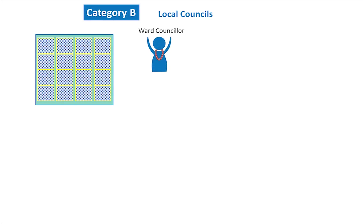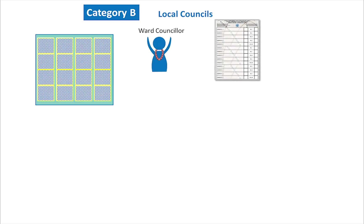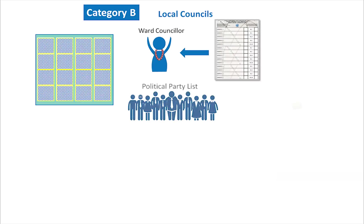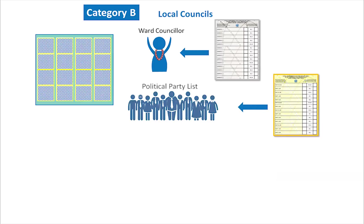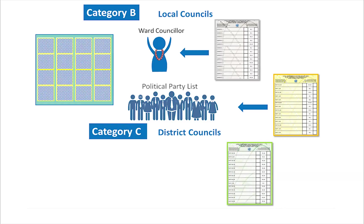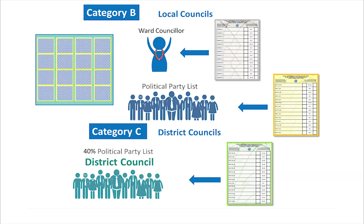In local council elections, voters will receive three ballot papers. The white or grey ballot paper is to elect the ward councillor to the local council in which they are registered. The yellow ballot paper is for the local council PR election, which will elect representatives from political parties to the local council. The green ballot paper is for the larger district council PR election, to elect 40% of councillors from political parties to the district council.